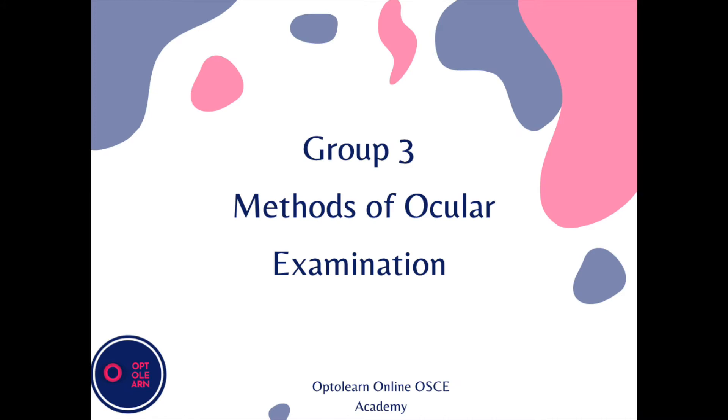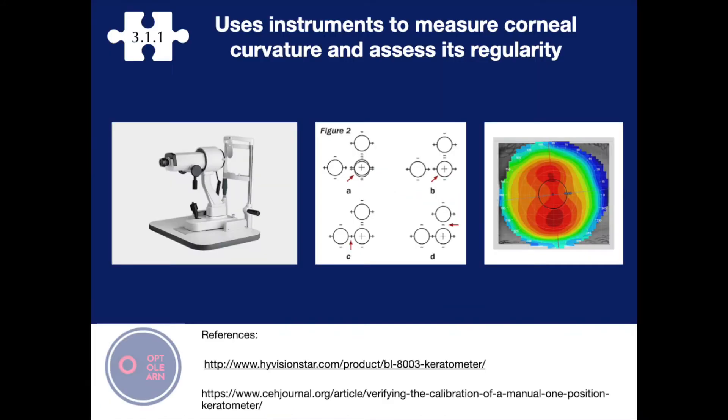Hello and welcome to OptoLearn's Online OSCE Academy. This tutorial will be discussing competency 3.1.1, which covers using instruments to measure corneal curvature and assess its regularity.